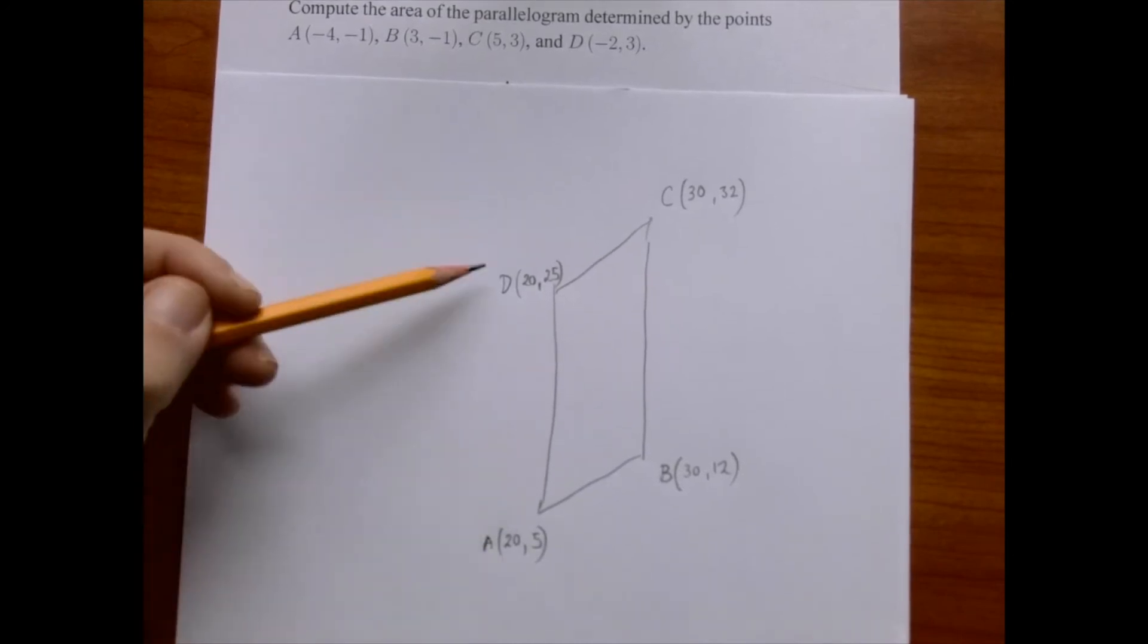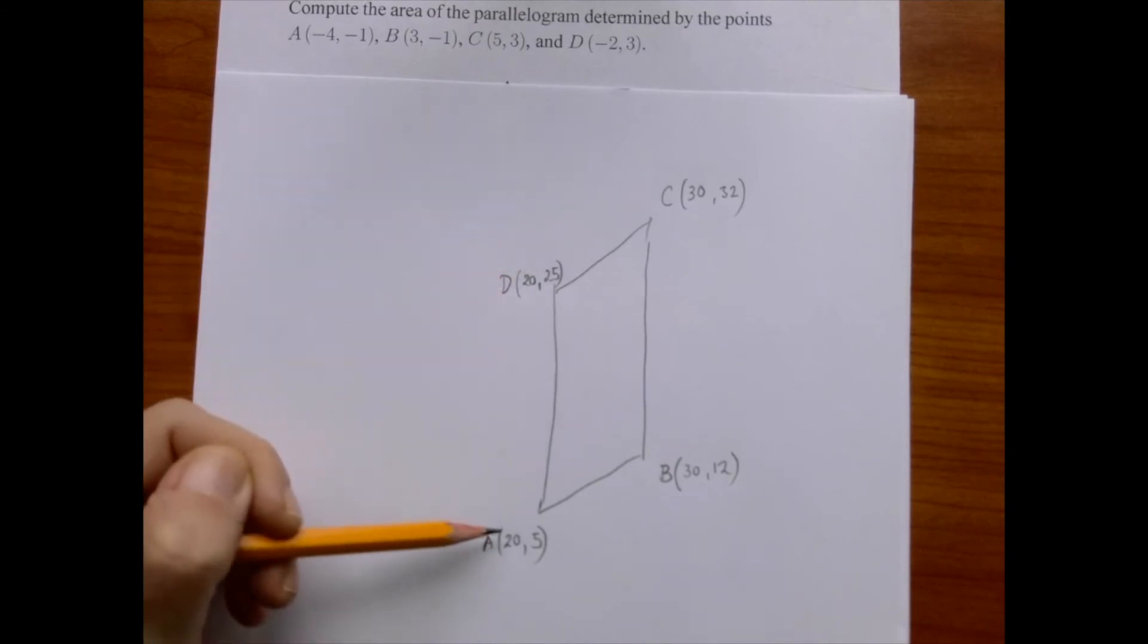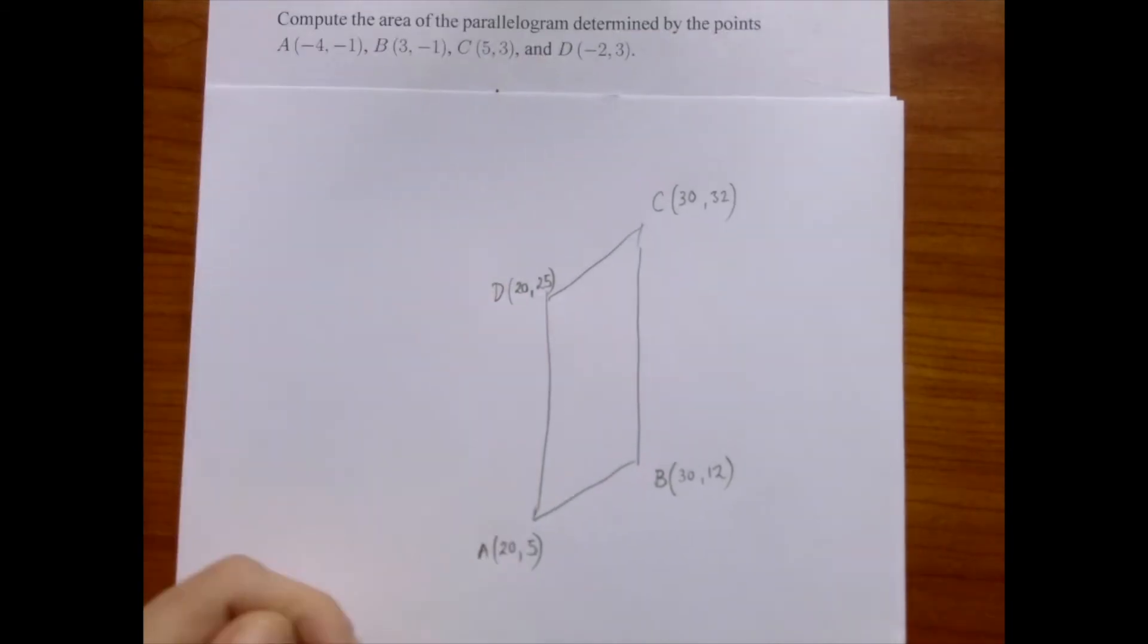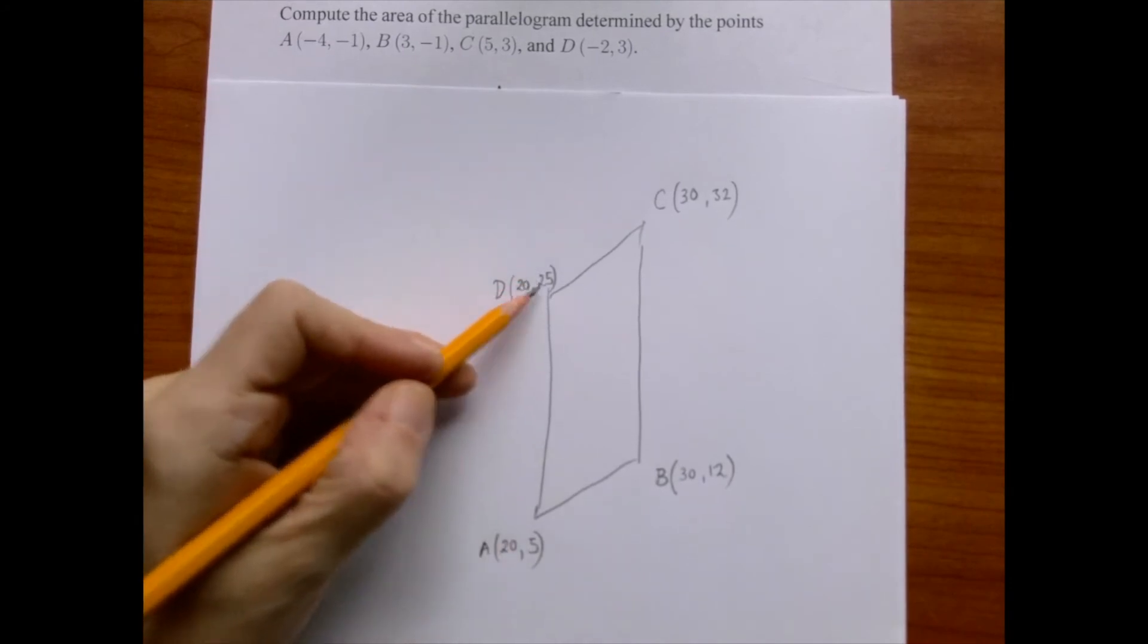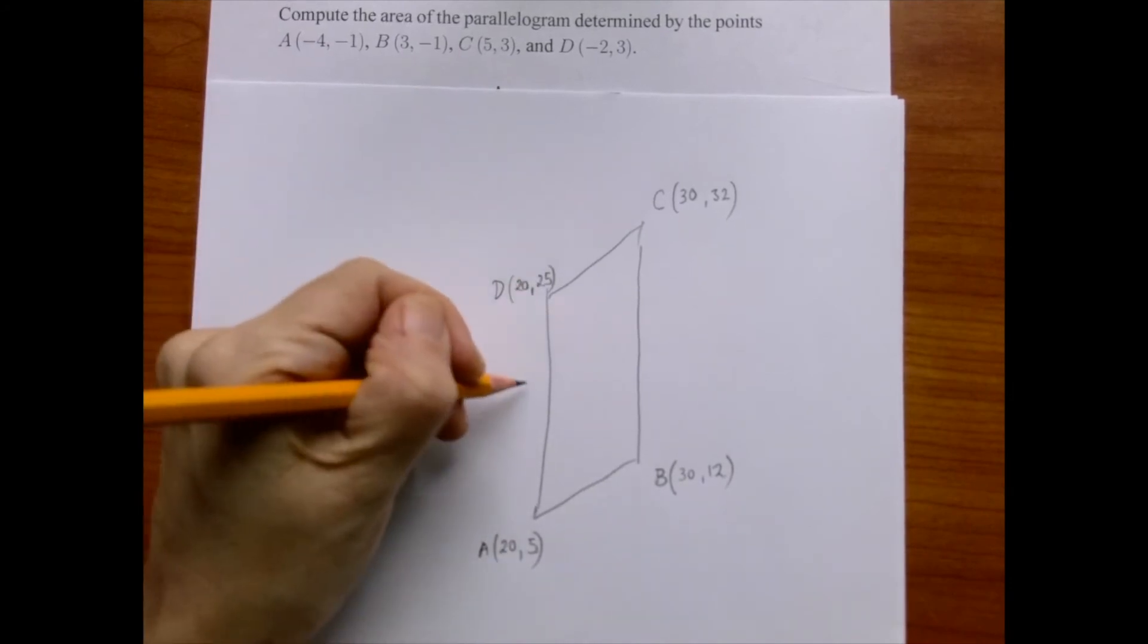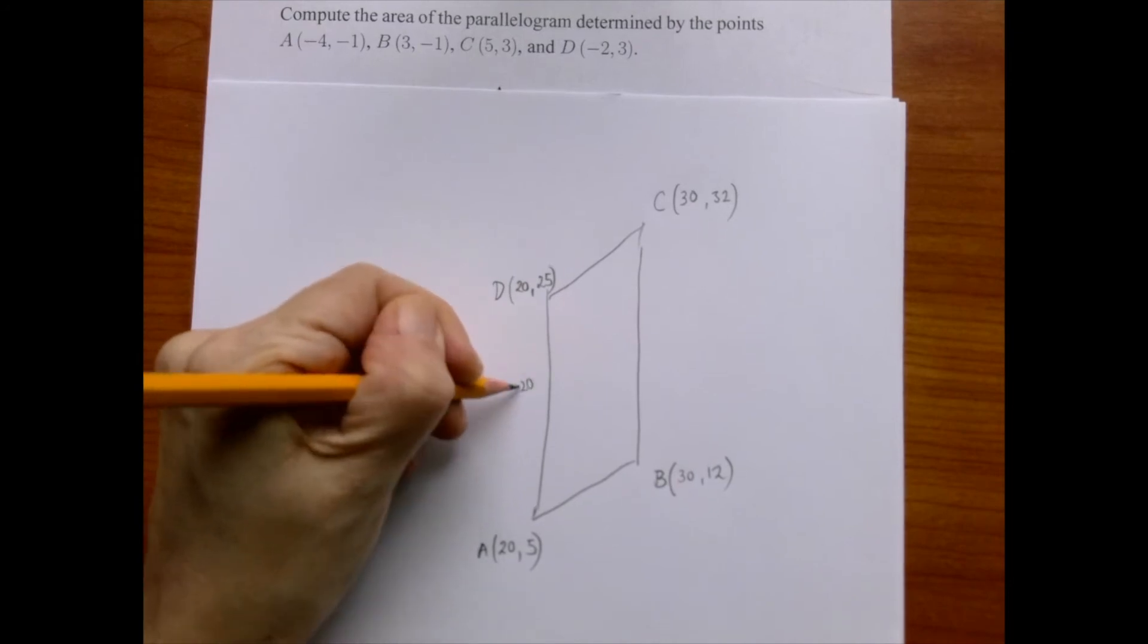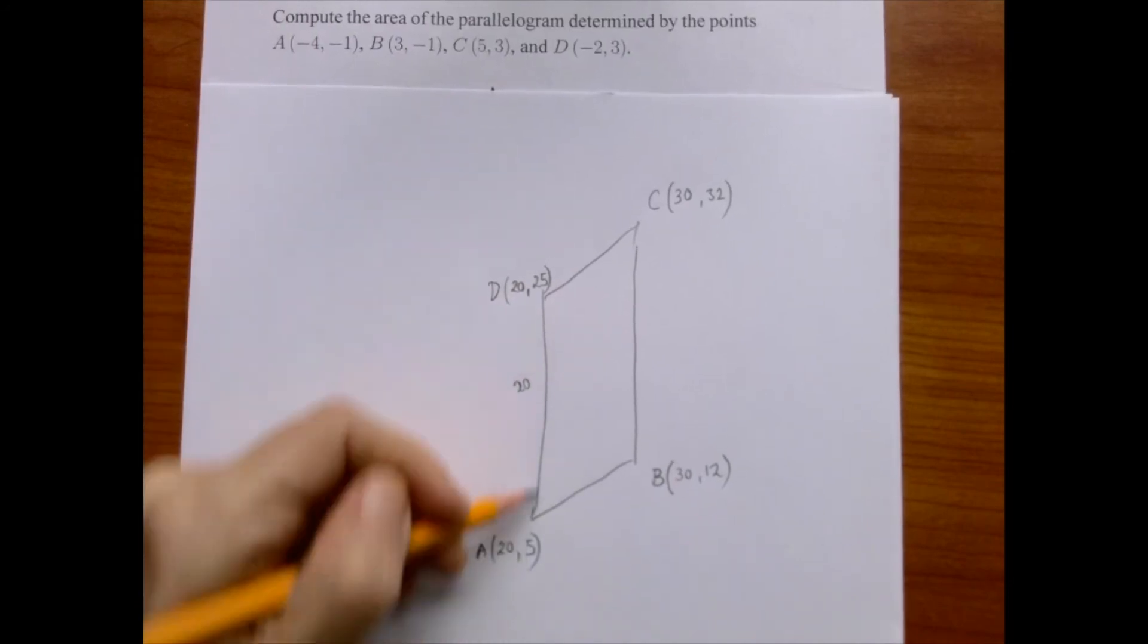If we look at A and D, the x-coordinate is the same, which is Y, it's a vertical line, and then the difference between the y-coordinates, twenty-five minus five, is the length. Because from five, we have to climb up to twenty-five, that's twenty units.